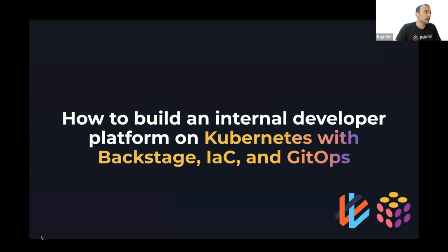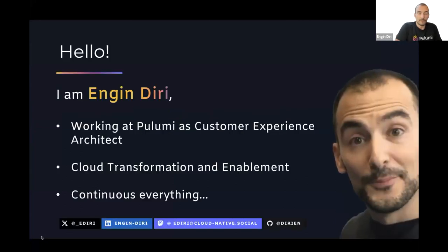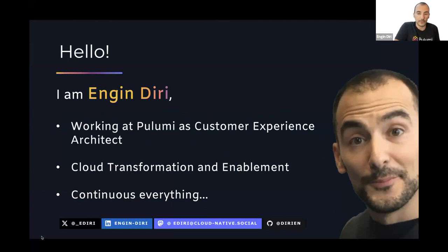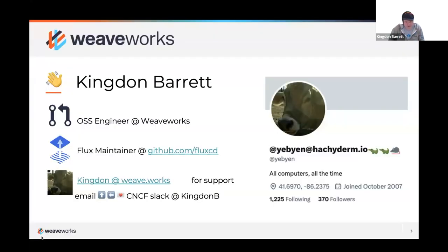My name is Engin Diri and I work at Pulumi as a Customer Experience Architect. I do cloud transformation enablement and I love continuous everything — deploy, delivery, you name it. I'm joined by Kingdon, who is an open source support engineer at Weaveworks and a Flux maintainer.